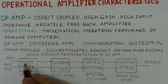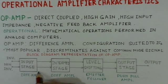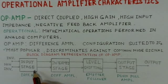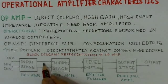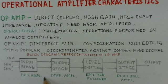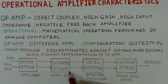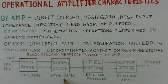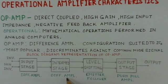In the block schematic, the first stage is the input stage, which has differential input and differential output — two inputs and two corresponding outputs. This stage provides most of the gain needed for the operational amplifier. The next stage is the intermediate stage, which provides the remaining gain needed for the operational amplifier.